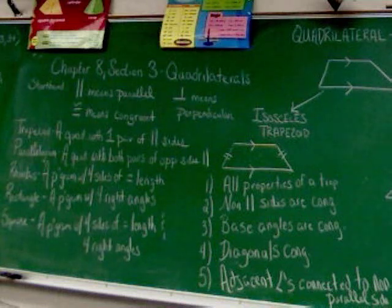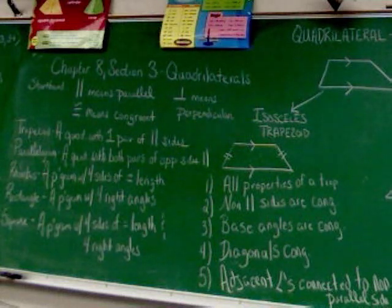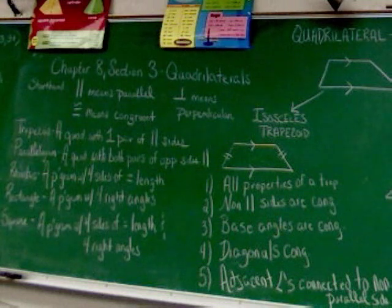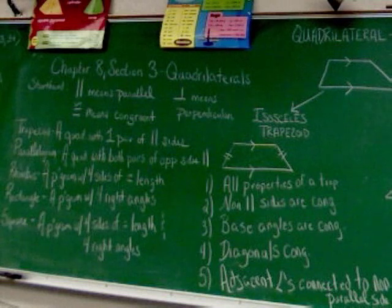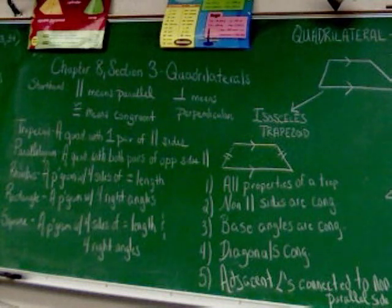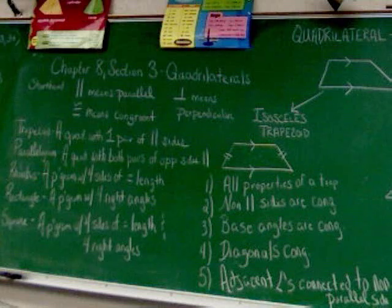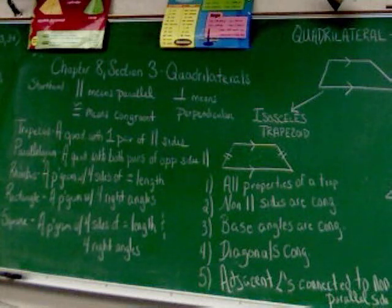A rhombus is a parallelogram with four sides of equal length. A rectangle is a parallelogram with four right angles. And a square is a parallelogram with four sides of equal length and four right angles.